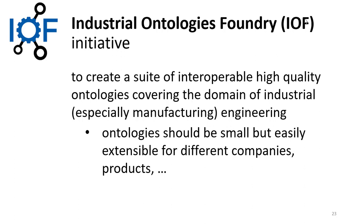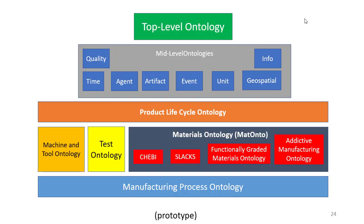And now we have the Industrial Ontologies Foundry. The goal is the same as for the OBO Foundry — we're going to create a suite of interoperable reference ontologies. We have a top-level ontology shared across all the others, then some mid-level ontologies for things like units of measure, and a product lifecycle ontology unifying everything from design to end-of-life. We also have things like a test ontology, a chemistry ontology, and ontologies for specific kinds of manufacturing such as additive manufacturing. Some of these now exist in very rough draft form.